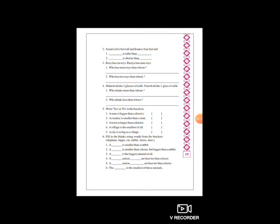પ્રાણ્યોના નામ છે. આમાંથી કયું છે કે જે rabbit કરતા નાનું છે? Elephant તો મોટો હોય. આ dash is smaller than horse, bigger than rabbit. એટલે કે એક એવું પ્રાણી છે જે horse કરતા નાનું છે પણ rabbit કરતા મોટું છે. તો ડીર - એટલે કે હરણ - તે જવાબ છે.